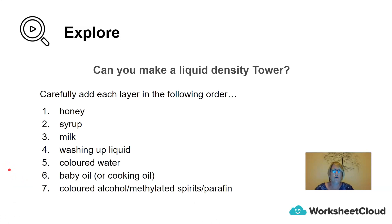Can you make a density tower? If you happen to have these liquids in and around your kitchen — honey, syrup, milk, washing-up liquid like a sunlight or dishwashing liquid, colored water, baby oil, cooking oil, and then methylated spirits or paraffin — you must add these layers in the following order: first honey, followed by syrup, then milk, then washing-up liquid, then colored water, then oil, then paraffin or methylated spirits.